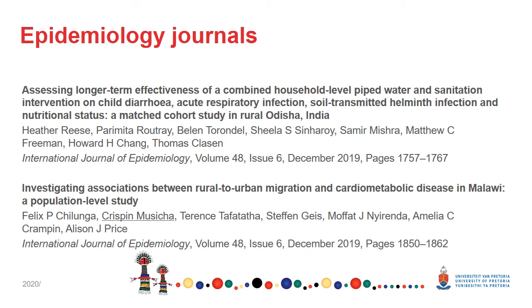There are many epidemiology journals. Please spend some time looking for one and just read the index to see the scope and breadth of epidemiology and its contribution to public health. Here are a few from the International Journal of Epidemiology. The first one: assessing longer-term effectiveness of a combined household level piped water and sanitation intervention on child diarrhea, acute respiratory infections, soil-transmitted helminth infection and nutritional status — a matched cohort study in rural Odisha, India.